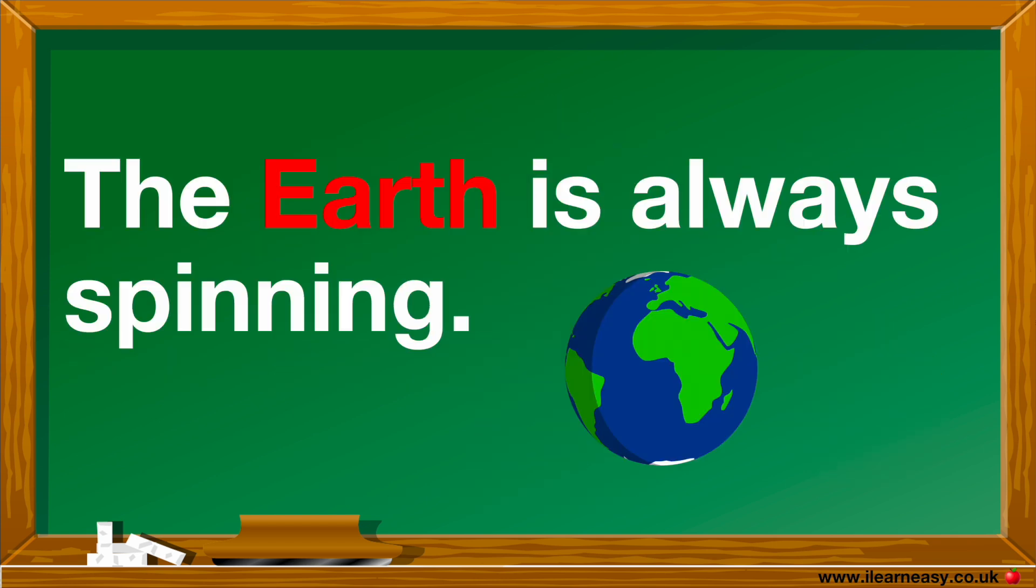The Earth is always spinning. During the daytime it is light and we can see the sun as the Earth is facing towards the sun. During the nighttime it's dark as the Earth is facing away from the sun.